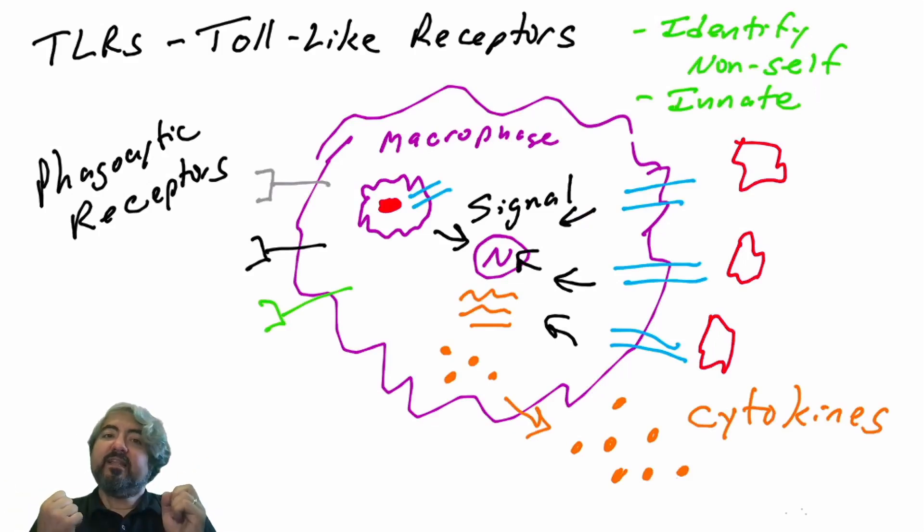Just try to keep track of the idea that phagocytic receptors function to trigger phagocytosis, while toll-like receptors function to signal into the cell.